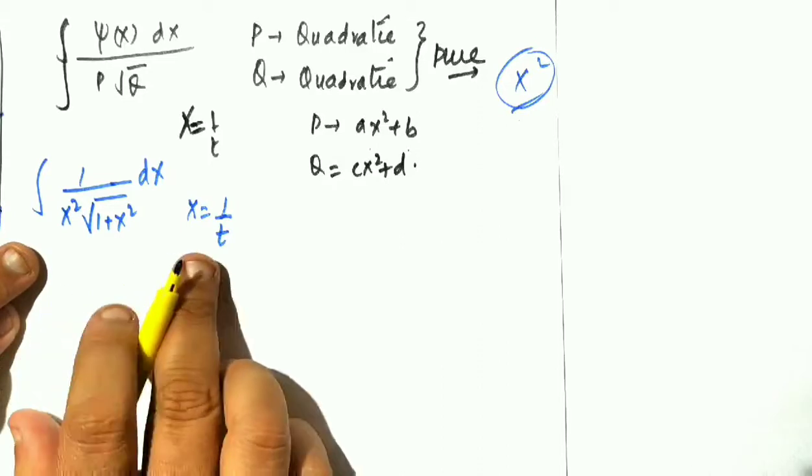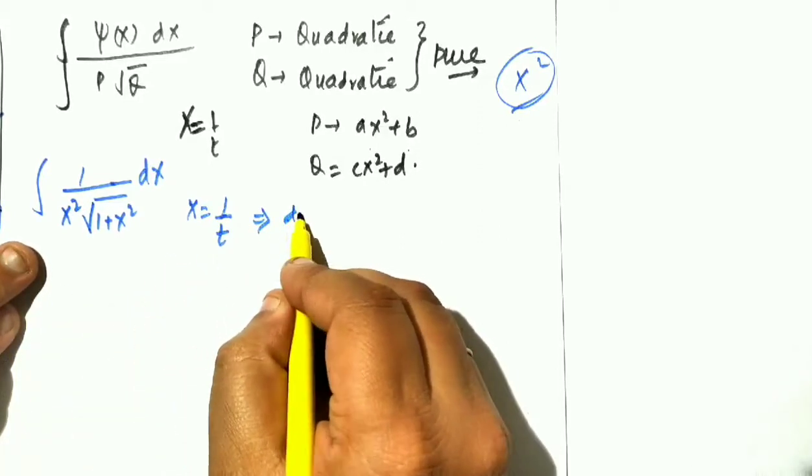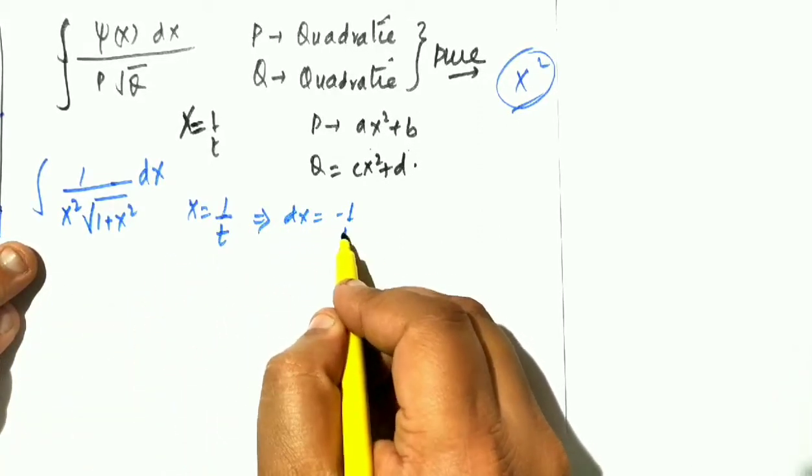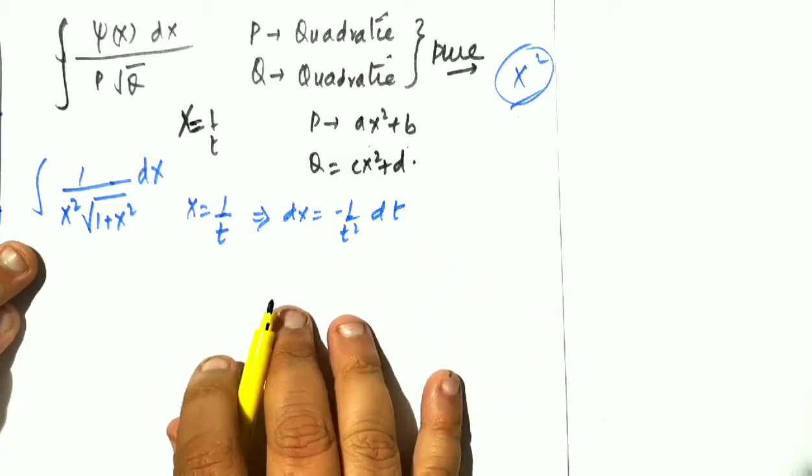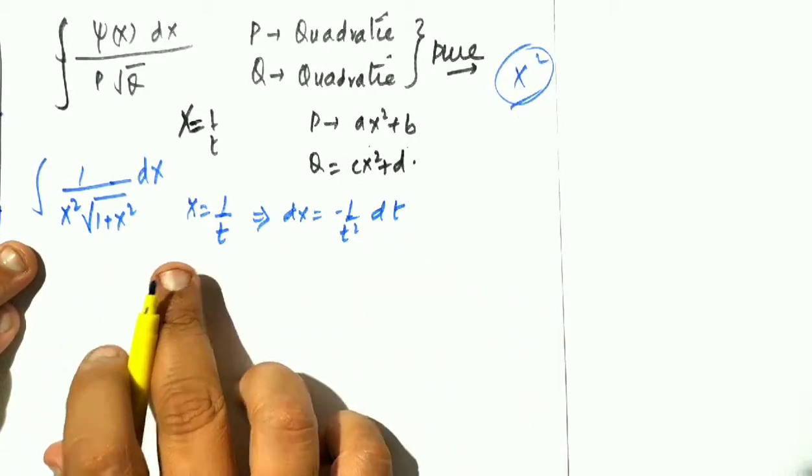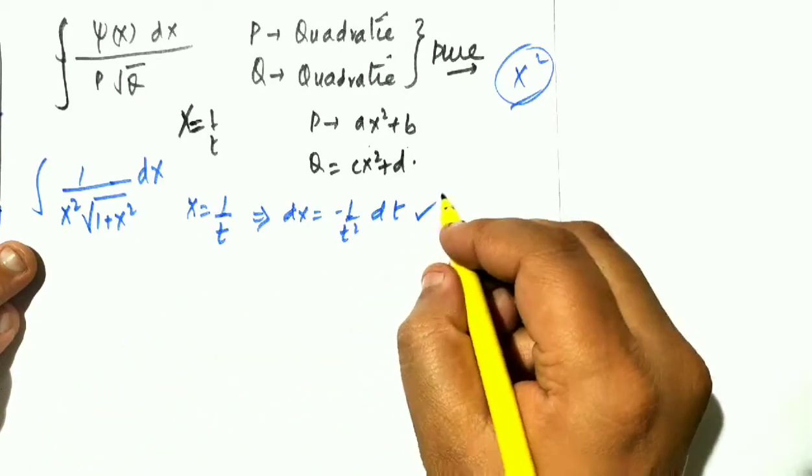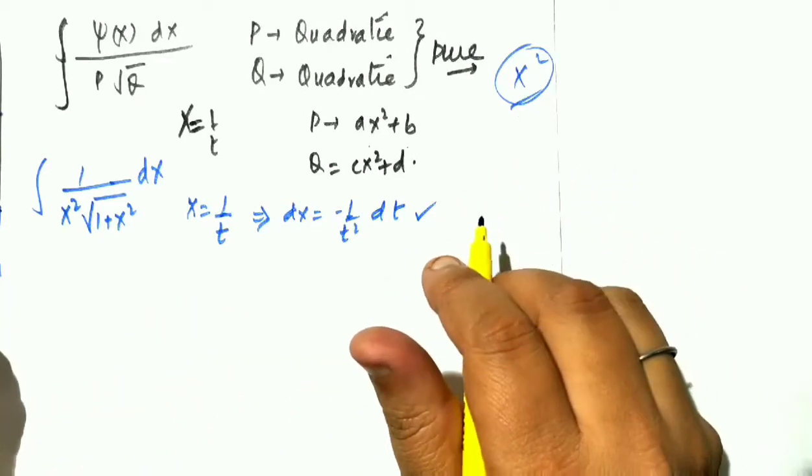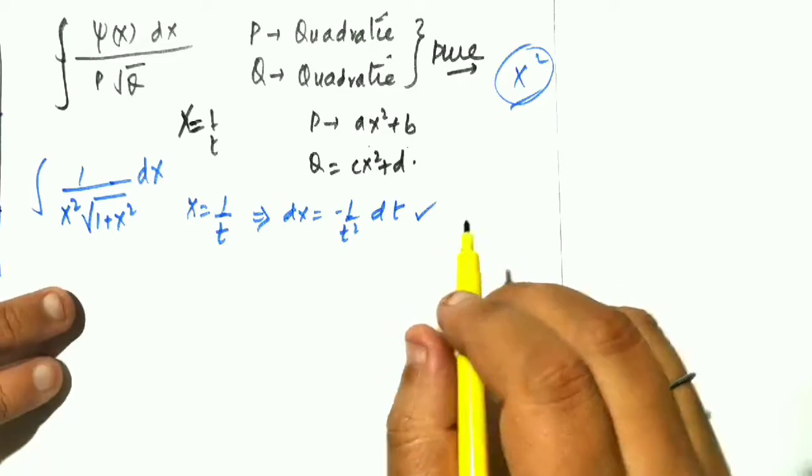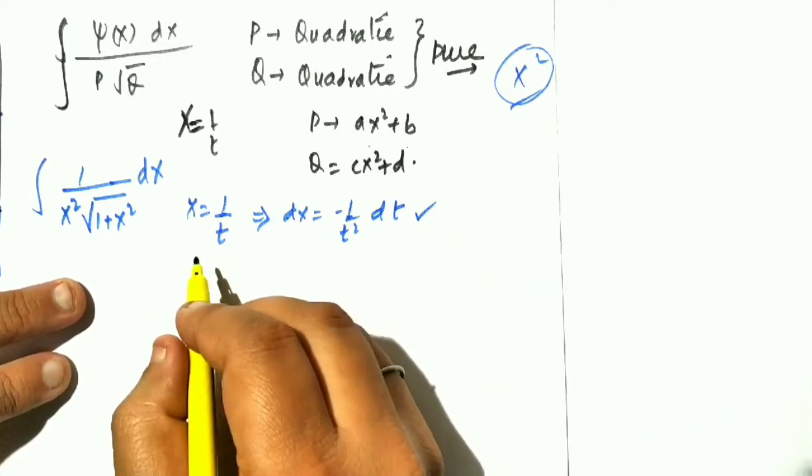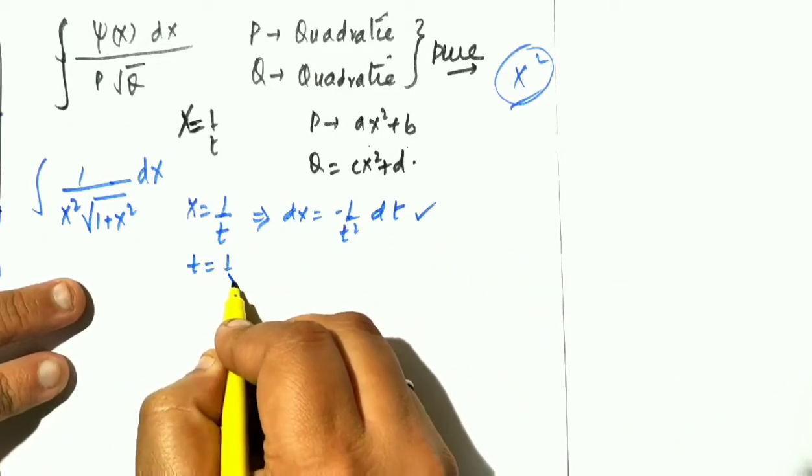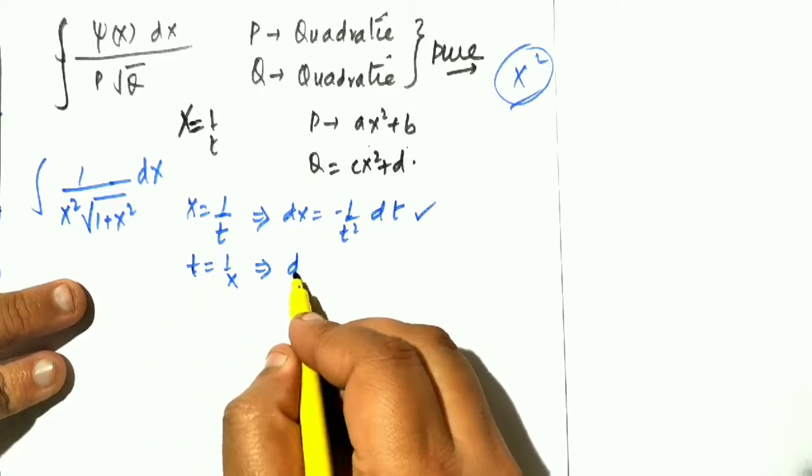So x equal to 1 by t. We will substitute this one by t. What do we have to do? dx will be minus 1 by x square dx. The second possibility is that if you have t equal to 1 over x.